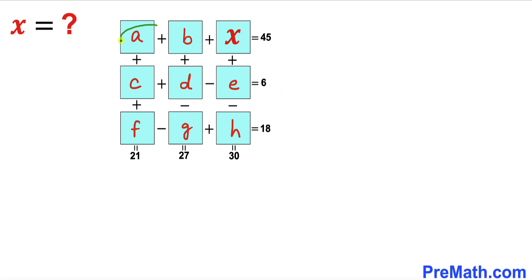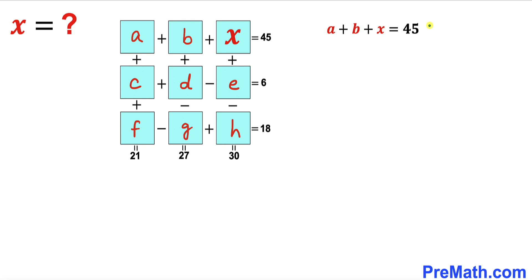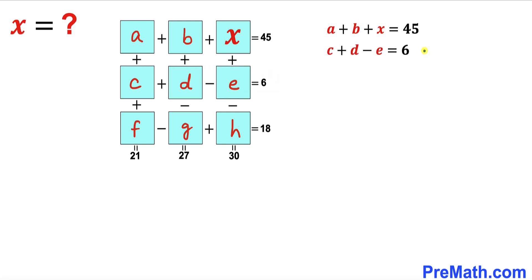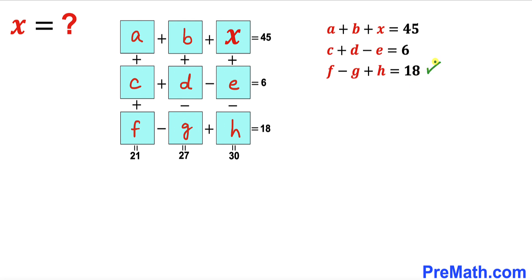Let's focus on the first row of boxes. Adding them gives us a plus b plus x equals 45. For the next row: c plus d minus e equals 6. And for the third row: f minus g plus h equals 18.